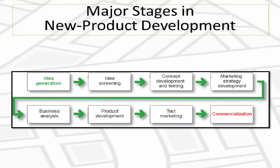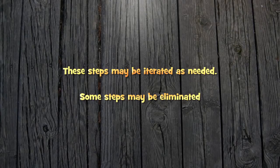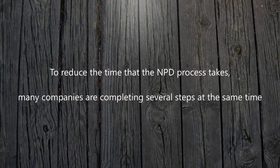The 8 steps are: Idea Generation, Idea Screening, Concept Development, Marketing Strategy Development, Business Analysis, Product Development, Test Marketing, and Commercialization. These steps may be iterated as needed, and some steps may be eliminated. To reduce the time that the NPD process takes, many companies are completing several steps at the same time, referred to as concurrent engineering or time to market.